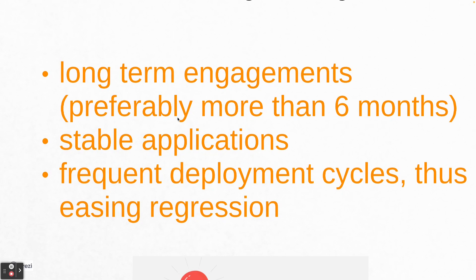Number two: stable applications. This is very important — if an application changes every week, if a proper agile methodology is not being followed and there are frequent changes, that might hamper your test scripts and you might encounter false failures. Number three: frequent deployment cycles, thus easing regression. For example, if over three months there are three monthly releases, after automating the first month's test cases, in the second release you can simply run that test suite and verify no new bugs have been introduced.